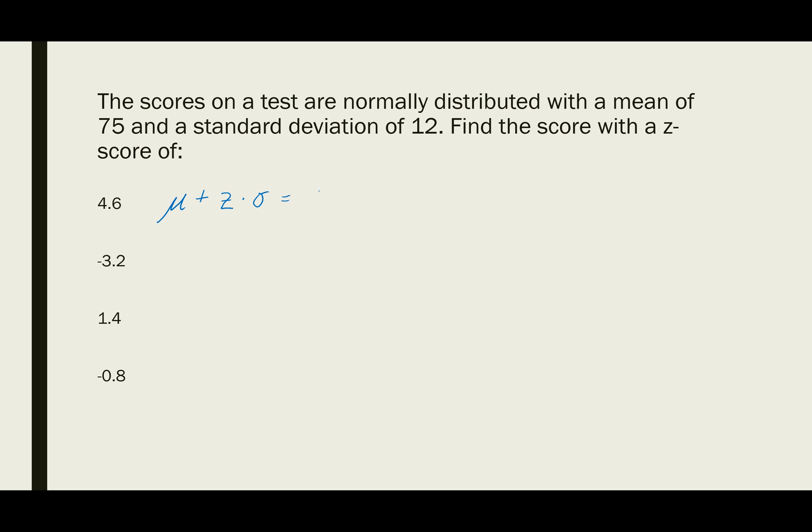In this case, our mean is 75, our z-score is 4.6, and our standard deviation is 12. So 4.6 times 12 is 55.2, and 75 plus 55.2 equals 130.2. The score that is 4.6 standard deviations above the mean is 130.2.